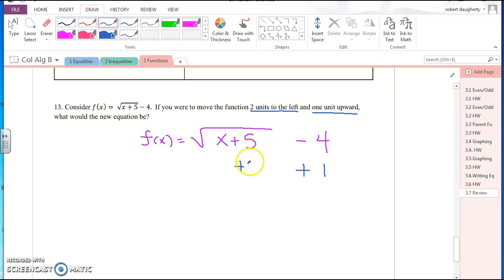Because remember, when I go to the left on the horizontal, that's the pluses. And when I go to the right, that's the minus. So it looks like this new function is going to be f(x) equals the square root of x plus 7 minus 3.